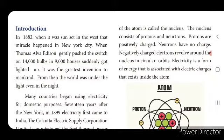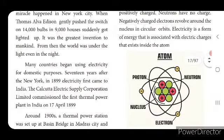Even during summer time, if the power is off for two hours, imagine how hard that is. So it is very hard if there is no electricity. Thomas Alva Edison invented the electric light bulb, and from then the world was under light even in the night.